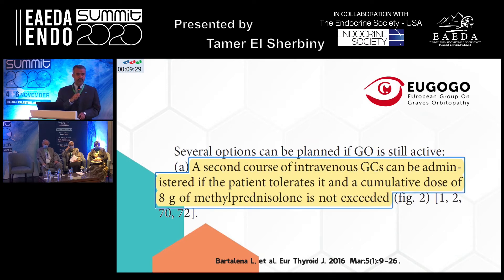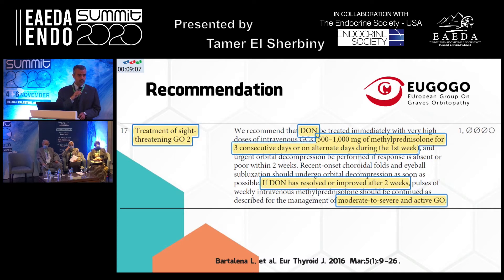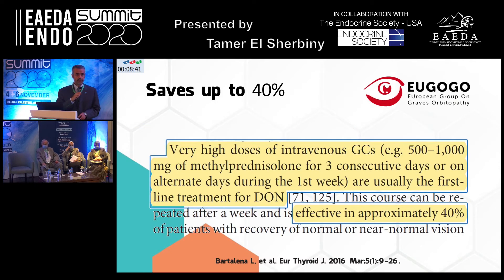If the patient shows no response to IV glucocorticoids, one option is to repeat IV glucocorticoid therapy, provided the cumulative dose does not exceed 8 grams. If the patient presents with sight-threatening Graves' orbitopathy — that is, dysthyroid optic neuropathy — give very high doses of IV glucocorticoids: 0.5 to 1 gram of methylprednisolone daily for three consecutive days. Assess after two weeks; if no response, perform decompression surgery, then evaluate. If still active, give IV glucocorticoids. These very high daily doses save the sight of up to 40% of such patients.